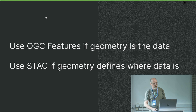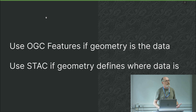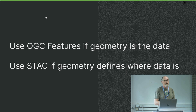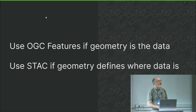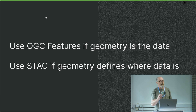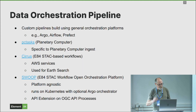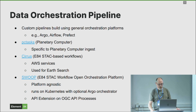For example, training data labels for machine learning algorithms — that's not really STAC. There is a STAC label extension and people have used it, but labels are a good example of something that actually belongs in a Features API rather than STAC.